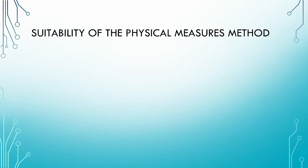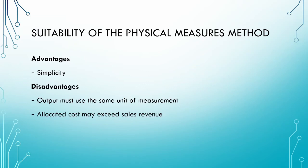Given what we have seen in the example, let us consider the suitability of the physical measures method. The main advantage is that it is very simple to use and understand. However, there are two major disadvantages. First, the output must be measured in the same units, because we are adding the output together. So if one output is a solid measured in kilograms while another is a liquid measured in litres, we have a problem as we cannot add kilograms and litres.